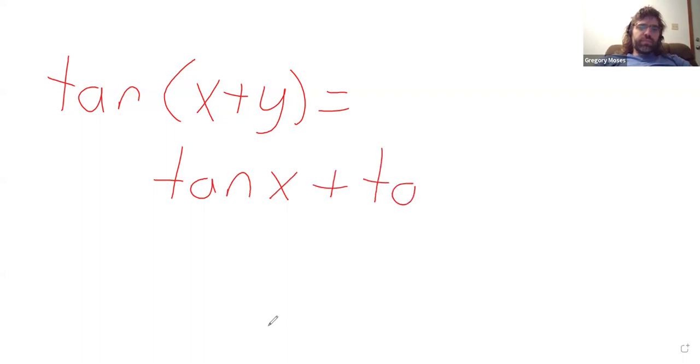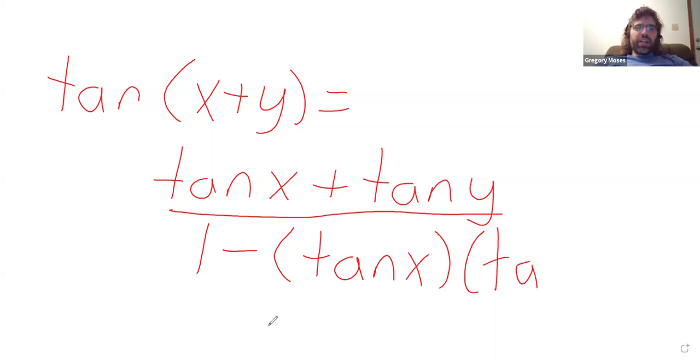So the tangent formula is unfortunately kind of messy. Let's see if I can move this thing out of the way so we have room to work. The tangent of x plus y is the tangent of x plus the tangent of y, divided by 1 minus the tangent of x times the tangent of y.